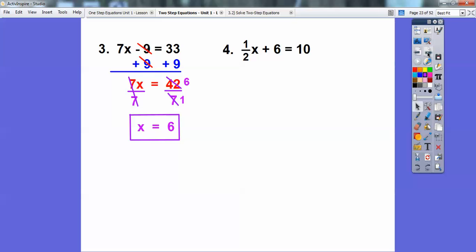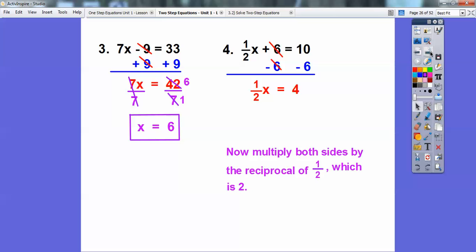All right, here's one with the fraction here. Don't let that scare you. We're just going to do our multiplicative inverse here in just a second. But first we've got to get rid of the plus 6 first. So we're going to minus 6 on both sides. So when we minus 6 on both sides, we get the 1 half x equals 4. Now to get rid of 1 half, we multiply both sides by the reciprocal of 1 half.